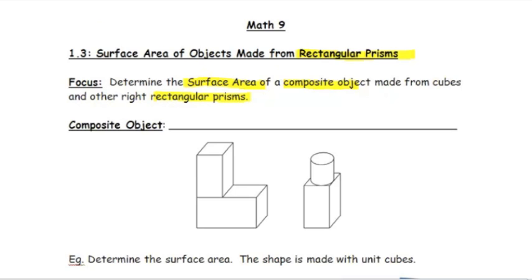First of all, a composite object is just two or more shapes put together.